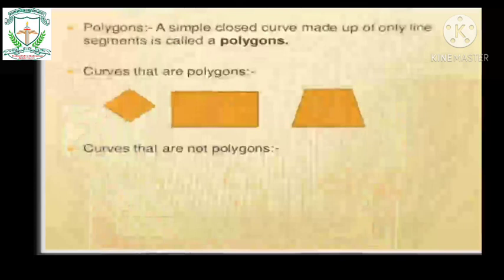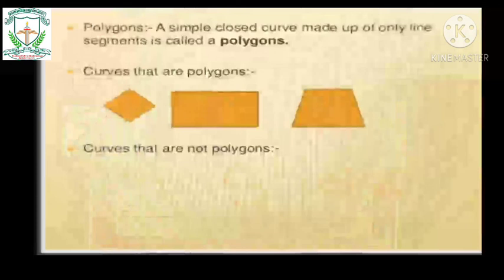These three figures are examples of curves that are polygons. You can observe that they have simple curves, are closed curves, and are made up of only line segments. In contrast, curves that are not polygons either don't have a simple curve, are not closed, or are not made up of only line segments.